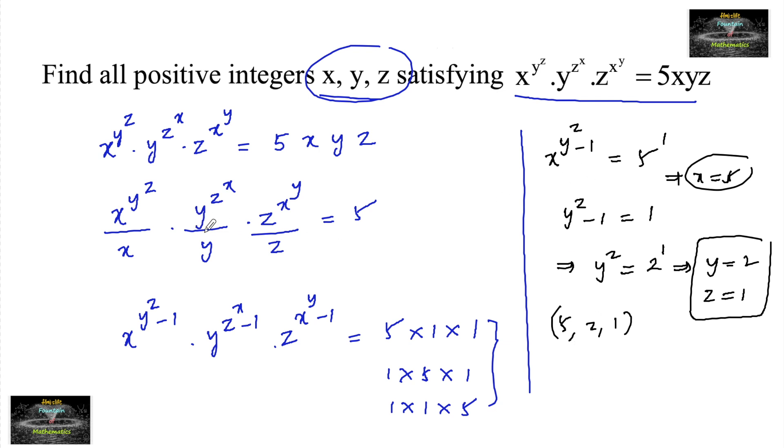Now if I consider y to the power of z power x minus 1 is equal to 5, we can write y is equal to 5 and z is equal to 2 and x is equal to 1. That means another possibility we are getting: 1, 5, 2.